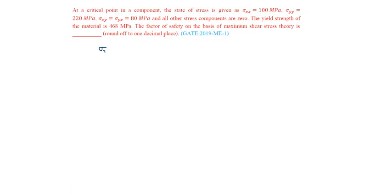Given sigma xx is 100 megapascals and sigma yy is 220 megapascals, sigma xy equals sigma yx which equals 80 megapascals. We know sigma 1 comma 2